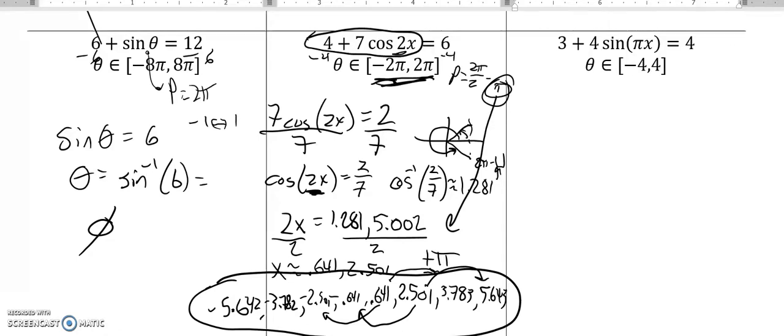Next one. Negative 4 to 4, I'm in radians. I have this multiplier of π, so my period is going to be 2π divided by π, so my period is 2. So I'm going to add and subtract values of 2 to get all the answers. Let me solve this, so subtract 3. 4 times sine of πx equals 1. Divide by 4. Sine of πx equals 1 fourth.